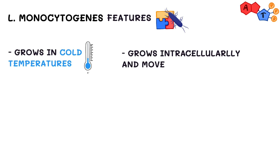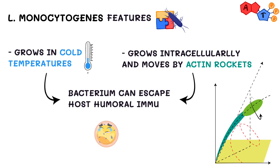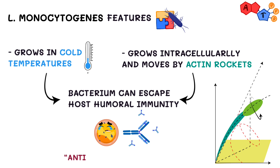The bacterium grows intracellularly, and it can move by means of actin rockets, which are filaments of actin that polymerize and propel the bacteria both intracellularly and across the membranes of different cells. All of these special features allow the bacteria to escape the host humoral immunity, or in other words, the antibody defense mechanism.